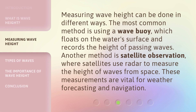Measuring wave height can be done in different ways. The most common method is using a wave buoy, which floats on the water's surface and records the height of passing waves. Another method is satellite observation, where satellites use radar to measure the height of waves from space. These measurements are vital for weather forecasting and navigation.